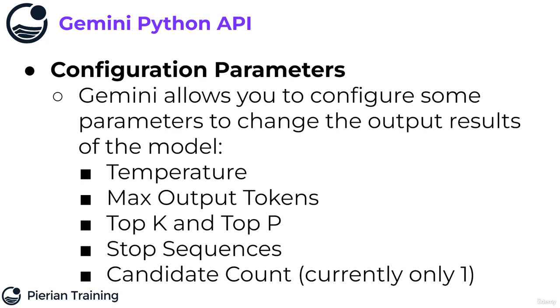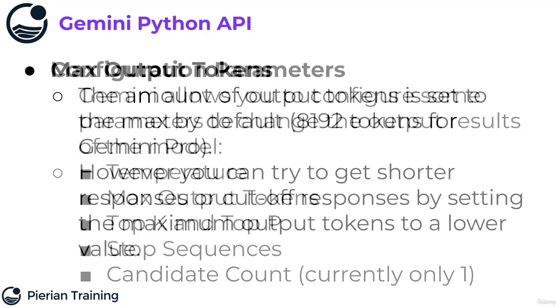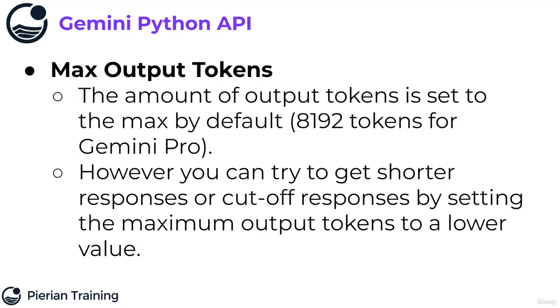I should note that at the time of this filming, candidate count can only be a value of 1. So let's explore these parameters in a little more detail. First, let's start with a simple parameter: max output token.